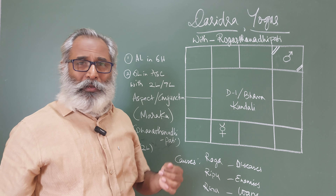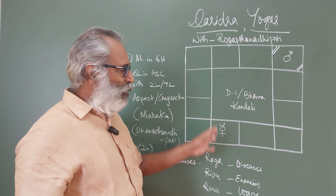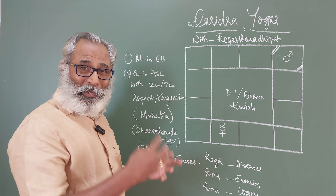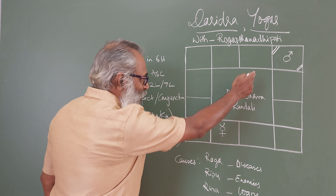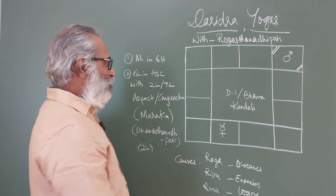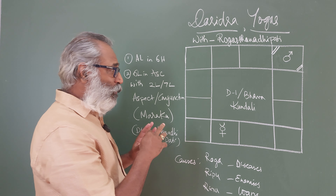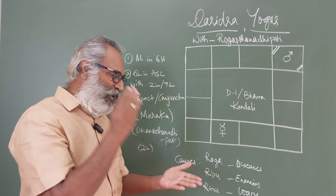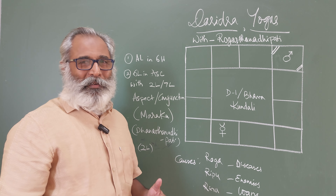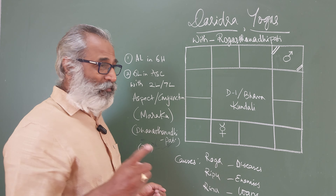People keep asking to make a class on Parivartana Yoga — whether it is good, bad, or ugly. Ascendant Lord in the sixth house and sixth Lord in the Ascendant — there is a Parivartana, no doubt, and this gives you good things also. Don't think that Dharidra Yoga means that from day one the person goes through Daridra — nothing like that. If a person has to fall, he has to climb first, so it will allow him to climb. You need to be cautious that you should not fall — this is where it hits.